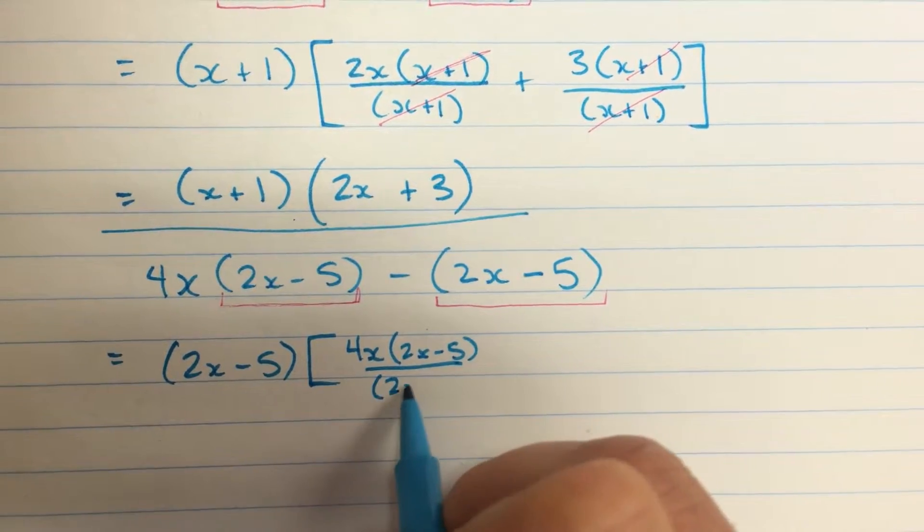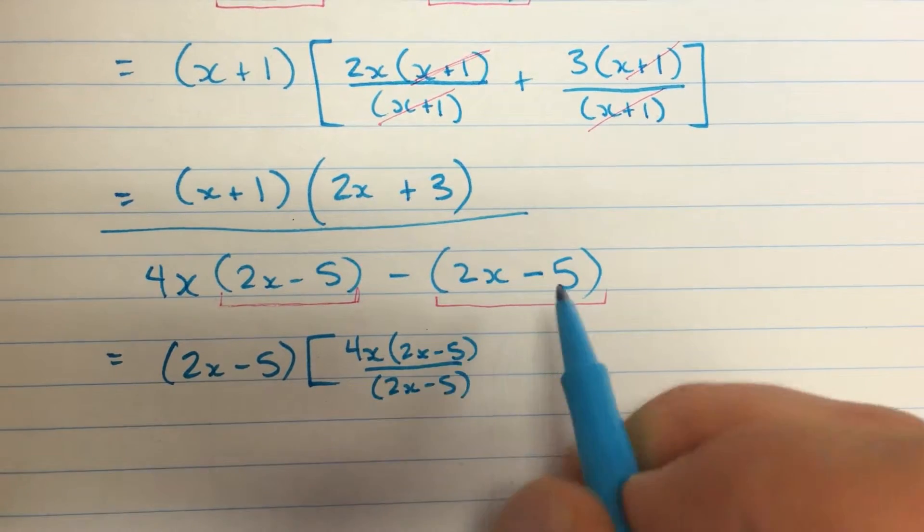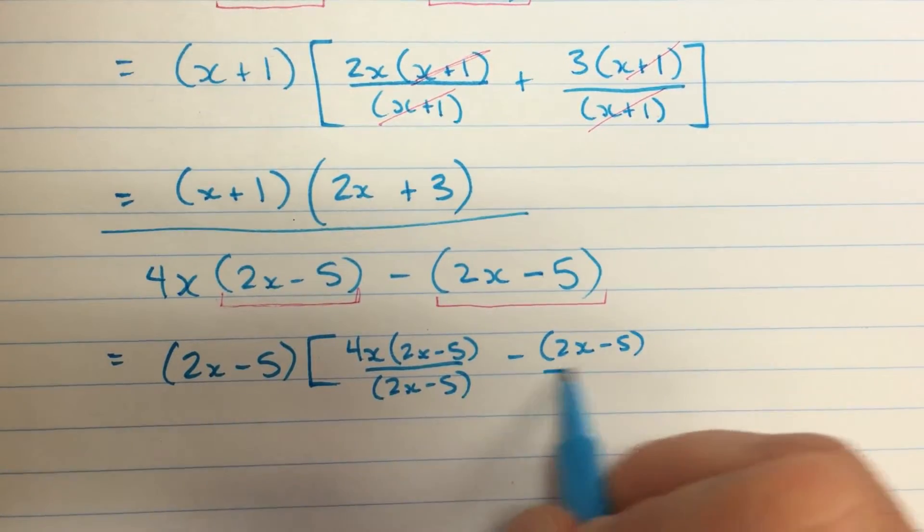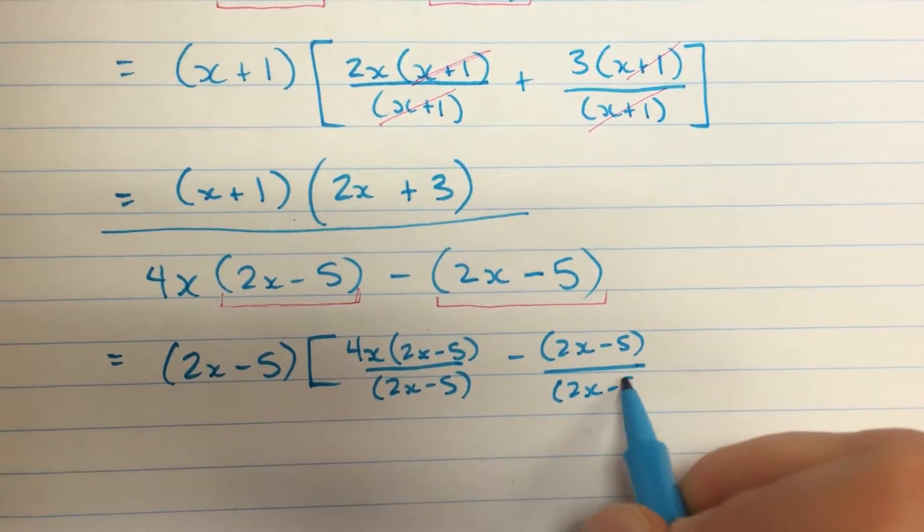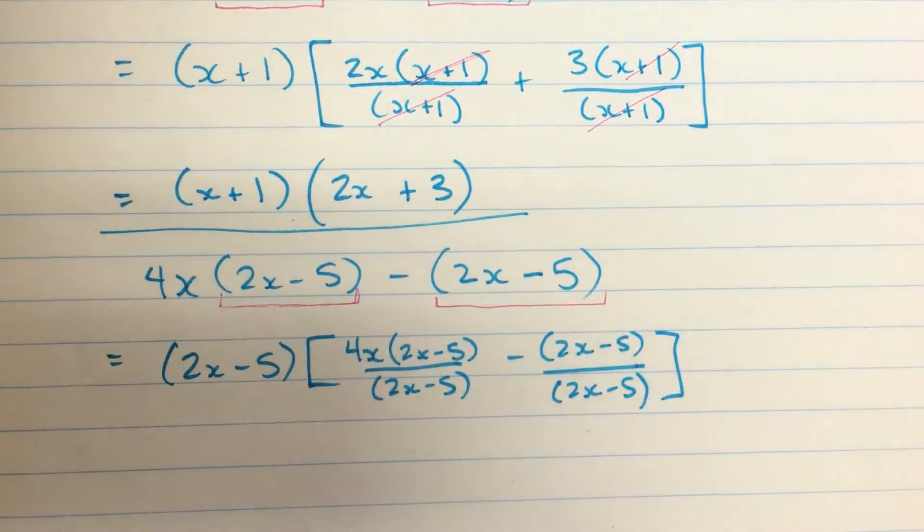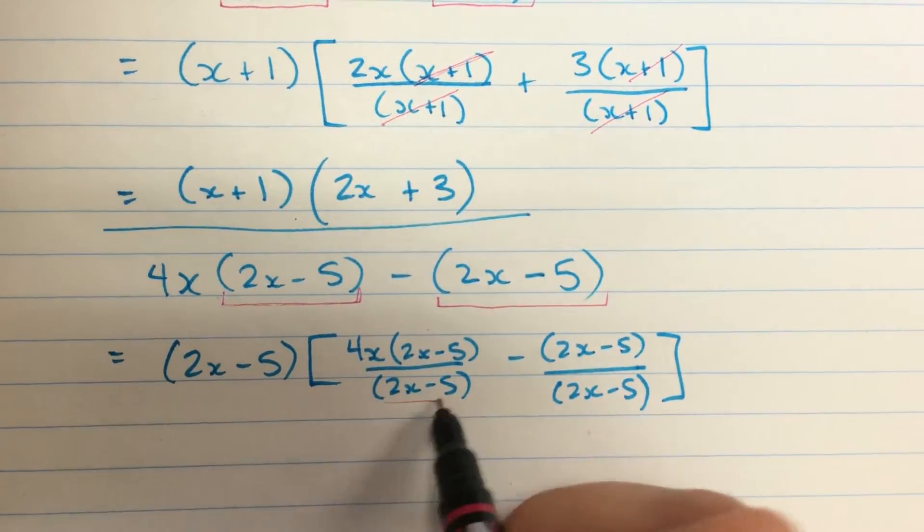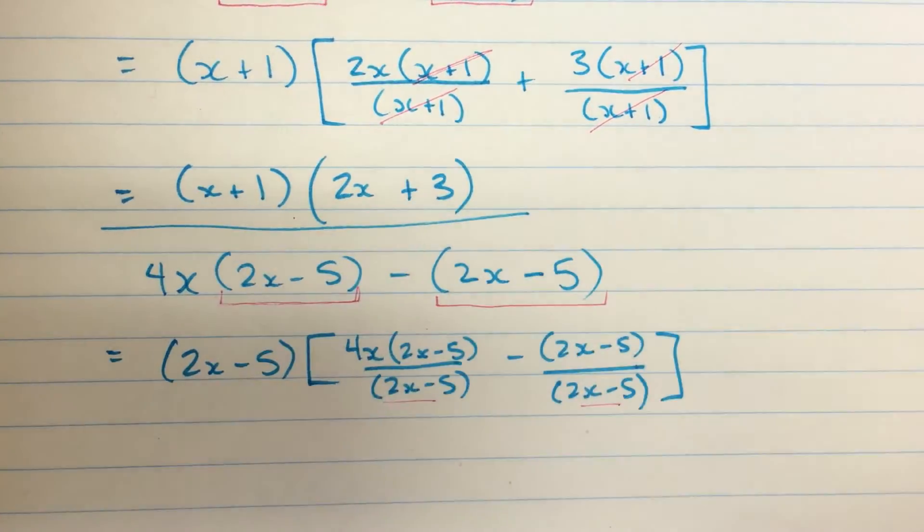That we will divide by 2x minus 5. And over here we have minus 2x minus 5. And we will divide it by 2x minus 5. So here is the thing we are dividing. In each case that's the thing that we have factored out.